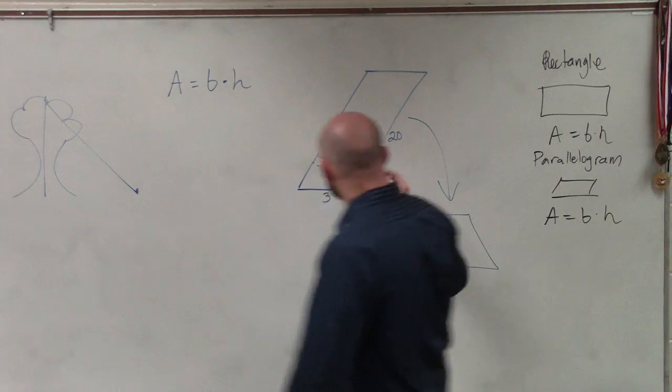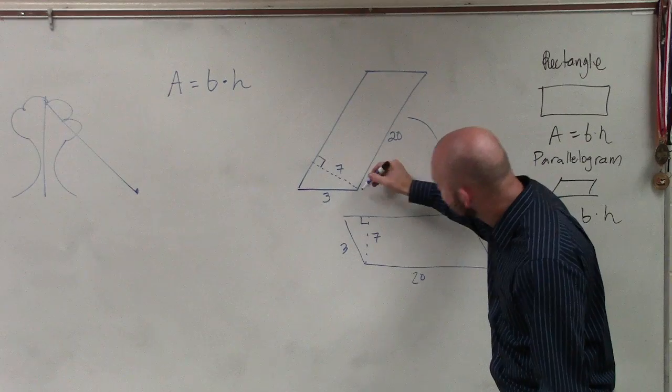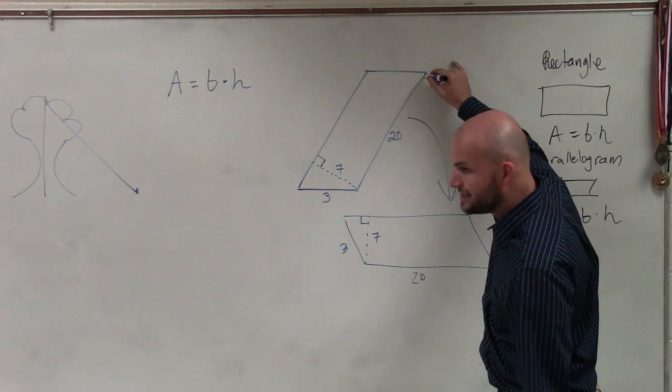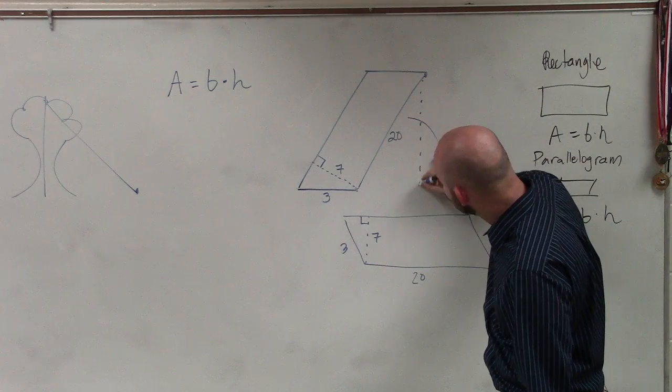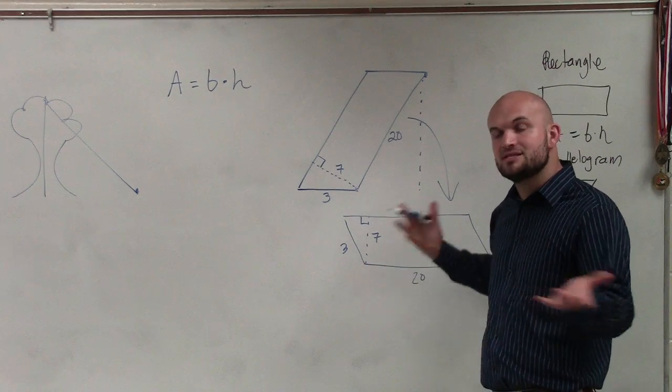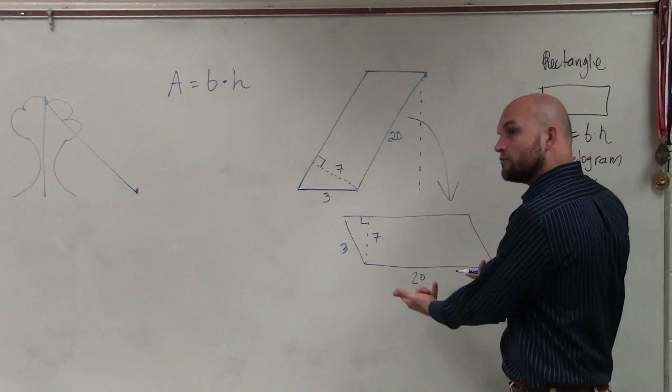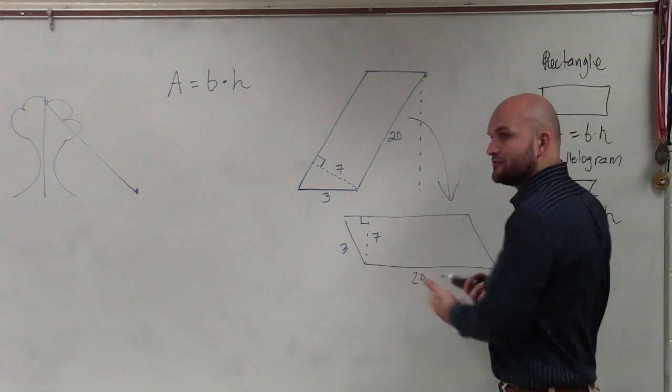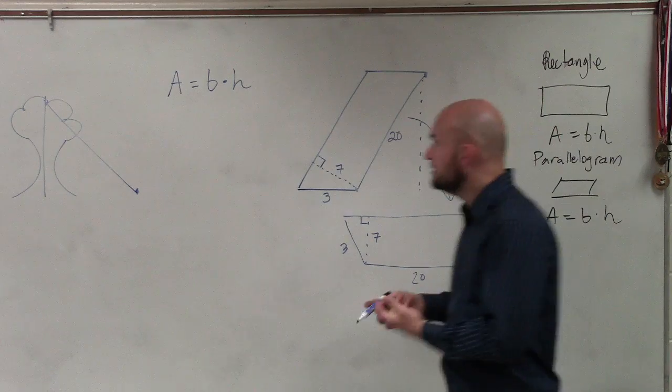So this 20 represents the distance from here to here. We need to find the distance straight down. Since we were not provided that, and we don't have a means to figure it out, we're going to have to rotate it to use a different base and different height.